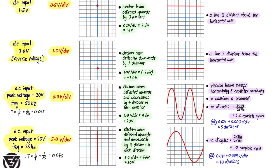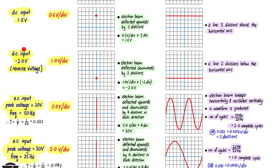In the third example, there's a DC supply of −2.0 volts — a reverse voltage — and the y-gain is set at 1 volt per division. Because it's a positive voltage that deflects upward, a negative voltage deflects downward. With the y-gain at 1 volt per division and a 2-volt input, the beam goes down by two divisions. When the time base is switched on, the beam sweeps left to right, giving a horizontal line two divisions below the axis.